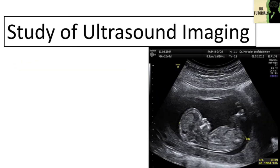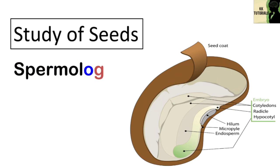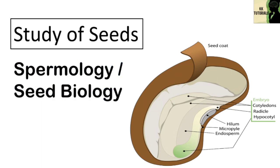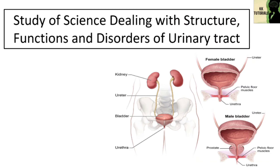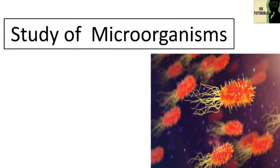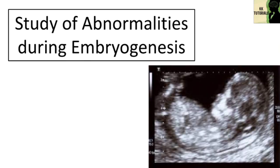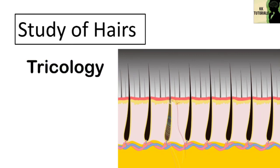The study of ultrasound imaging is called sonography. The study of seeds is called spermology or seed biology. The science dealing with the structure, functions, and disorders of the urinary tract is called urology. The study of viruses is called virology. The study of microorganisms is called microbiology. The study of abnormalities during embryogenesis is called teratology. The study of hair is called trichology.